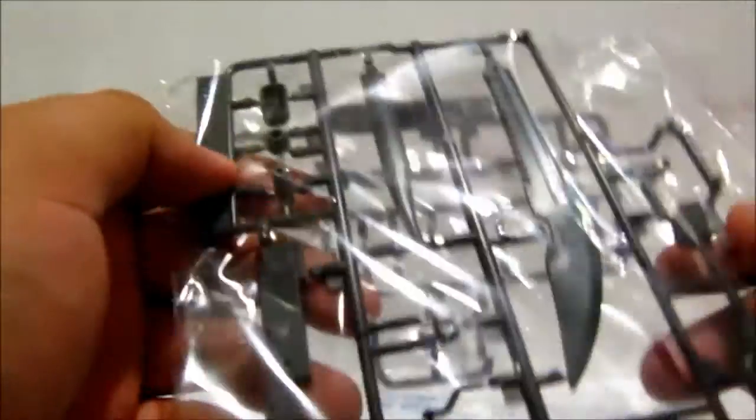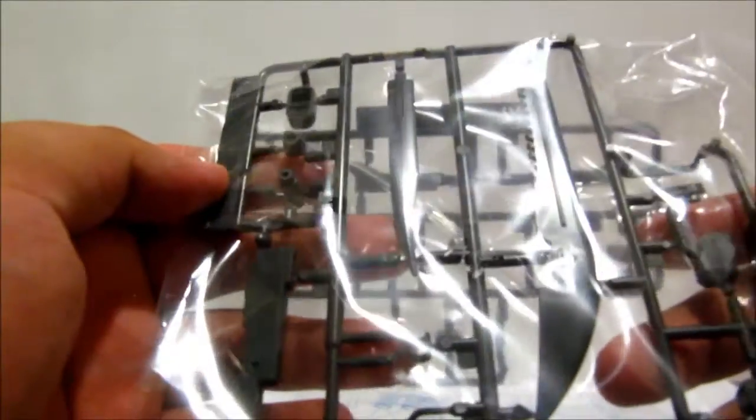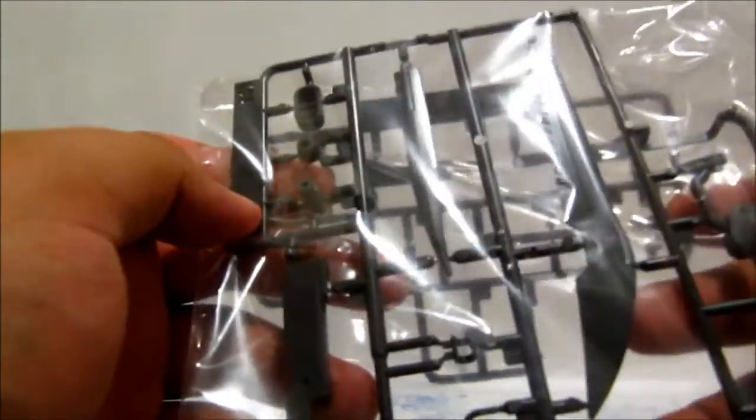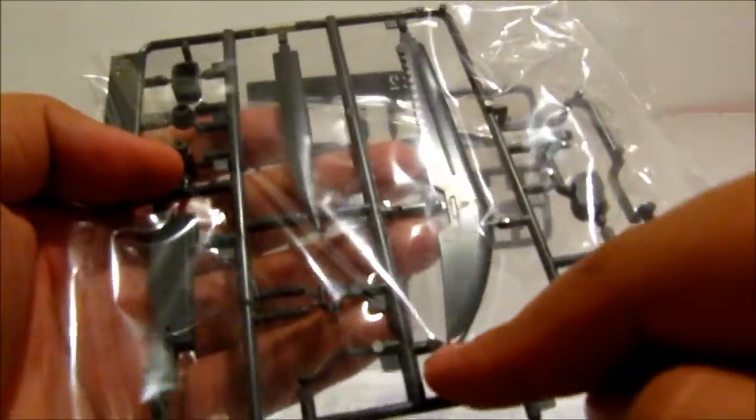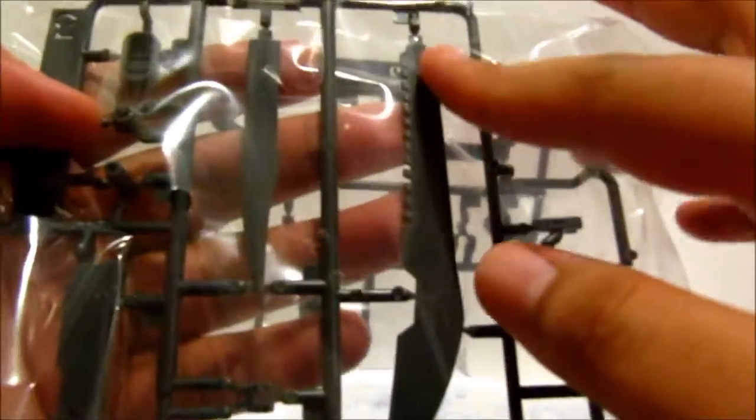And on this other plate, it's all the Heat Sword stuff. You can see right here, there's a gigantic monster sword. Look at this. Here's the Heat Sword and here's the Monster Sword. So yeah, pretty damn huge.